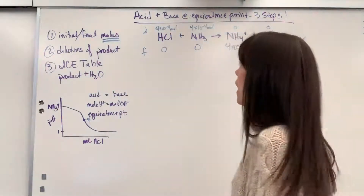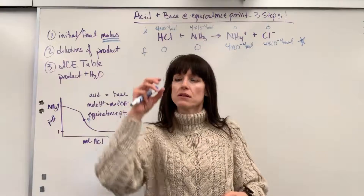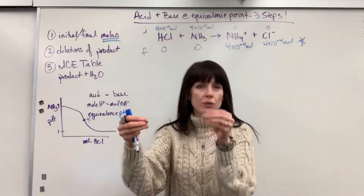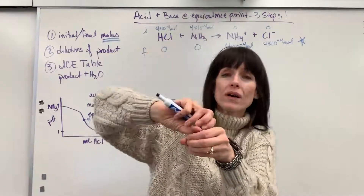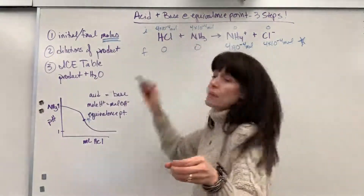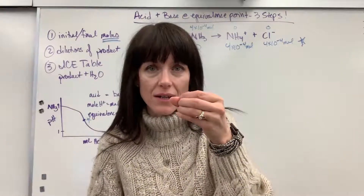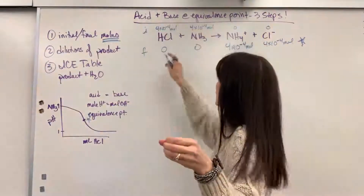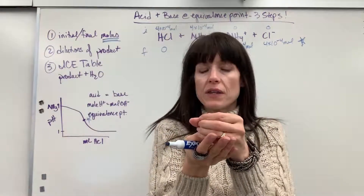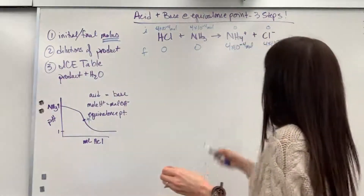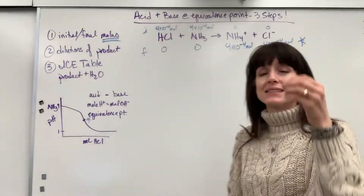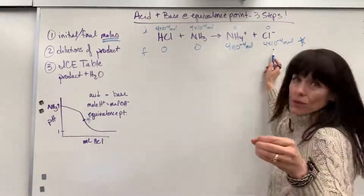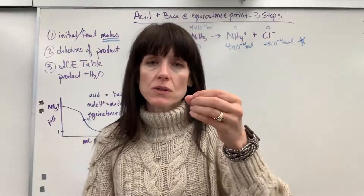Think about this: I literally have a little Erlenmeyer flask with 25 mL of HCl and another with 25 mL of ammonia. I pour these together. The acid and the base react. I've combined them, so I've got 50 mL total — 25 mL plus 25 mL. What's floating in there is ammonium, 4×10⁻⁴ moles, and the chloride. We want to find the pH of this new solution.